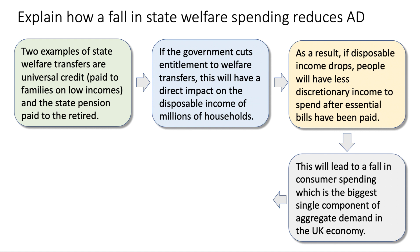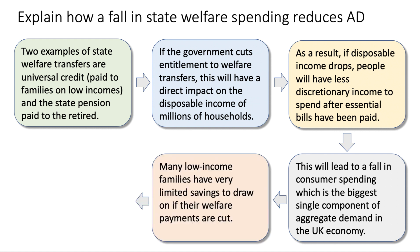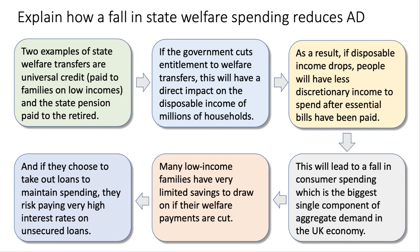This will lead to a fall in consumer spending, which is the biggest single component of aggregate demand. You could develop the analysis by thinking about the financial fragility of many families on low incomes — they often have very limited savings to draw on if their welfare payments are cut, and they might try to maintain their spending by taking out credit. But if they do that they risk paying very high interest rates on unsecured loans. Families in receipt of welfare tend to have a high propensity to consume, so cutting welfare has quite a significant effect on demand.